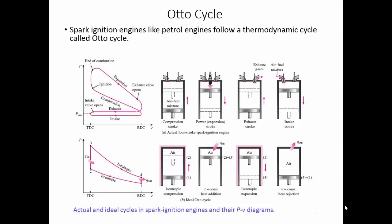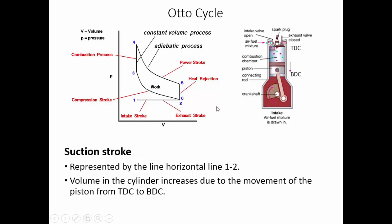Coming to the Otto cycle: spark ignition engines in general, like petrol engines, or those running on highly volatile fuels like LPG or CNG, all follow a thermodynamic cycle called the Otto cycle. In this diagram slide, at the top we have the actual ignition cycles and the respective pressure-volume (PV) diagrams showing the variation of pressure and volume inside the cylinder, along with the ideal cycle approximation.